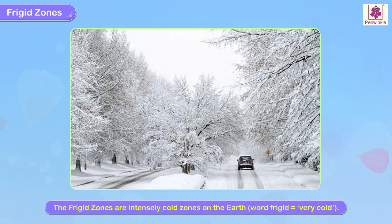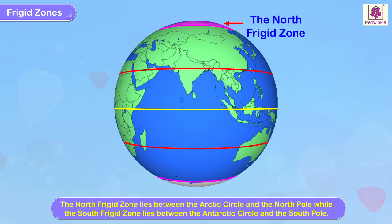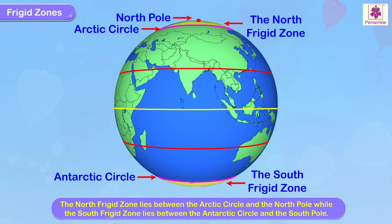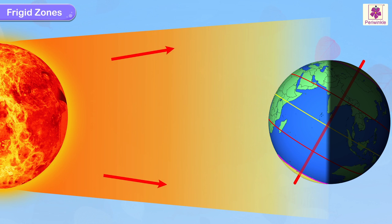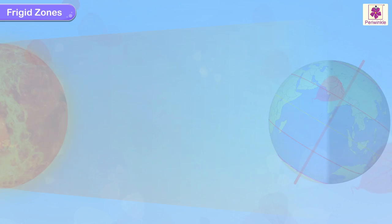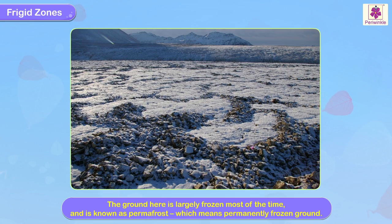Three: Frigid Zones. The frigid zones are intensely cold zones on the Earth; the word frigid means very cold. The north frigid zone lies between the Arctic Circle and the North Pole, while the south frigid zone lies between the Antarctic Circle and the South Pole. Being at the poles, the frigid zones receive very little sunlight and warmth. The ground here is largely frozen most of the time and is known as permafrost, which means permanently frozen ground.